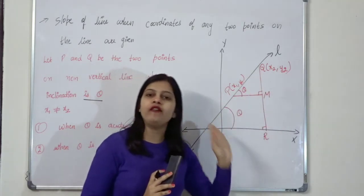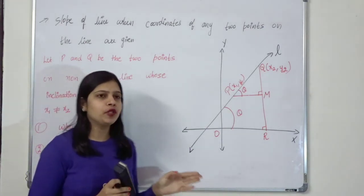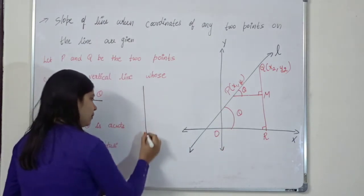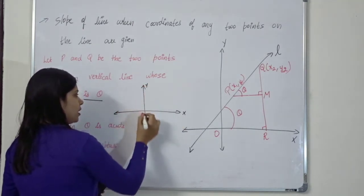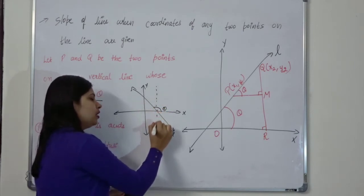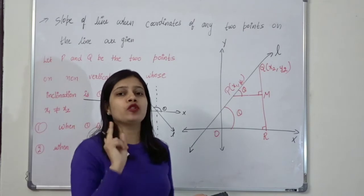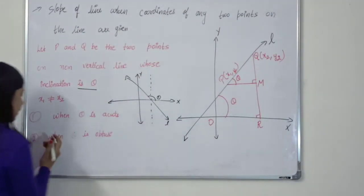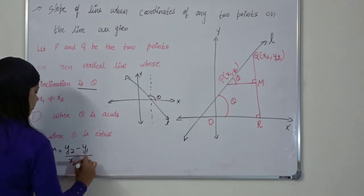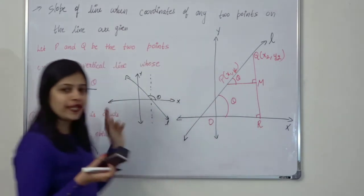For a non-vertical line L (where x1 is not equal to x2), there are two cases: theta makes an acute angle (theta between 0 and 90 degrees) or theta makes an obtuse angle (theta greater than 90 degrees). In both cases, the slope is calculated as (y2 minus y1) divided by (x2 minus x1).